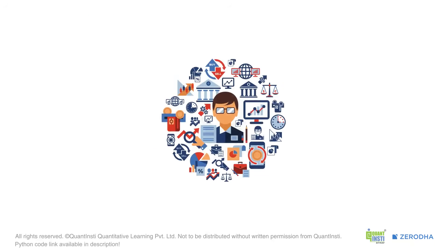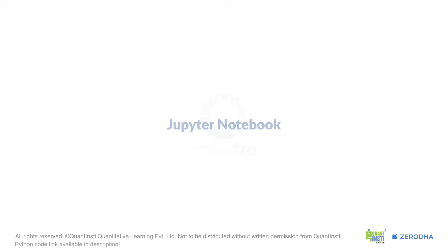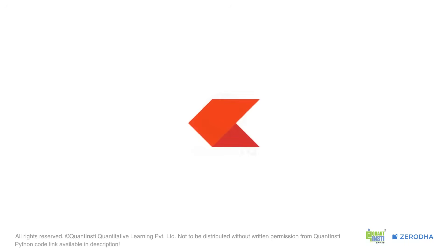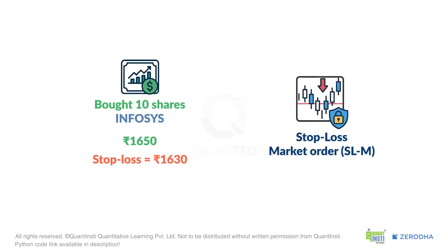Alright, theory's over. Let's see how to actually implement this using the Kite Connect API. I'm going to switch over to my Jupyter Notebook. Let's assume we've already authenticated with Kite Connect. Now imagine we've just bought 10 shares of Infosys at Rs. 1650. Our trading plan says we must place a stop loss at Rs. 1630. First, let's place an SLM order, which is the most common for guaranteed exits.